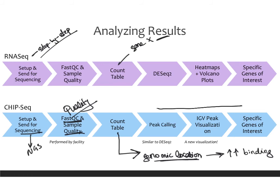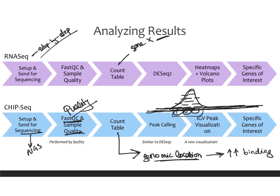The way we represent binding is with peaks on the chromosome. We draw in peaks wherever the locations are where our protein was binding more. We align the DNA sequences we got back from sequencing to the reference genome — because all our sequences line up to a specific genomic location, that tells us the protein must have been binding right there, producing a peak. Peak calling and peak visualization let us look at those peaks, giving you the fold change — how high the peak is — and a p-value if you compare groups. From this, you can identify specific genes or locations of interest.